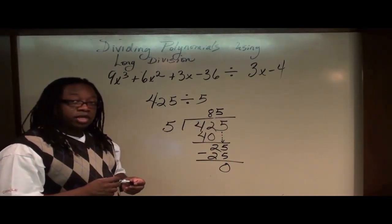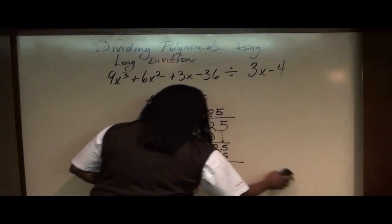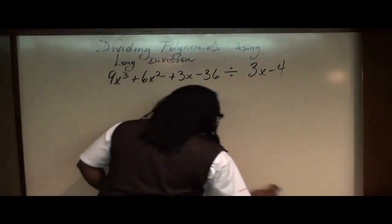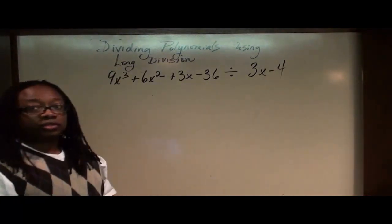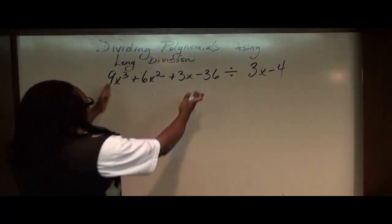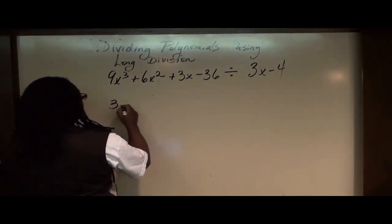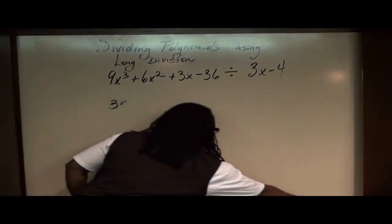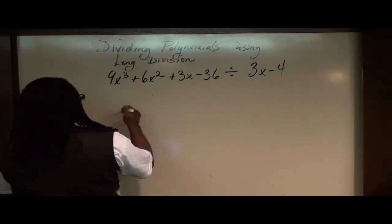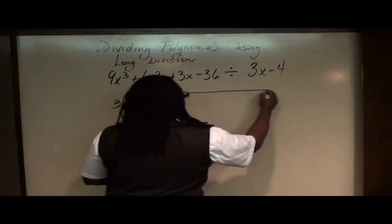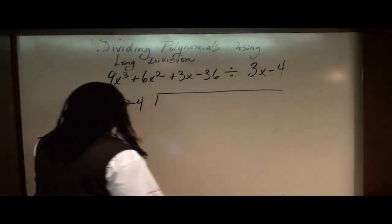And we're going to do the same thing doing polynomials. We're going to do the same type of division using polynomials. Given the same format, these two numbers, recall that we put the second number on the outside, 3x minus 4, and we put the first number on the inside.